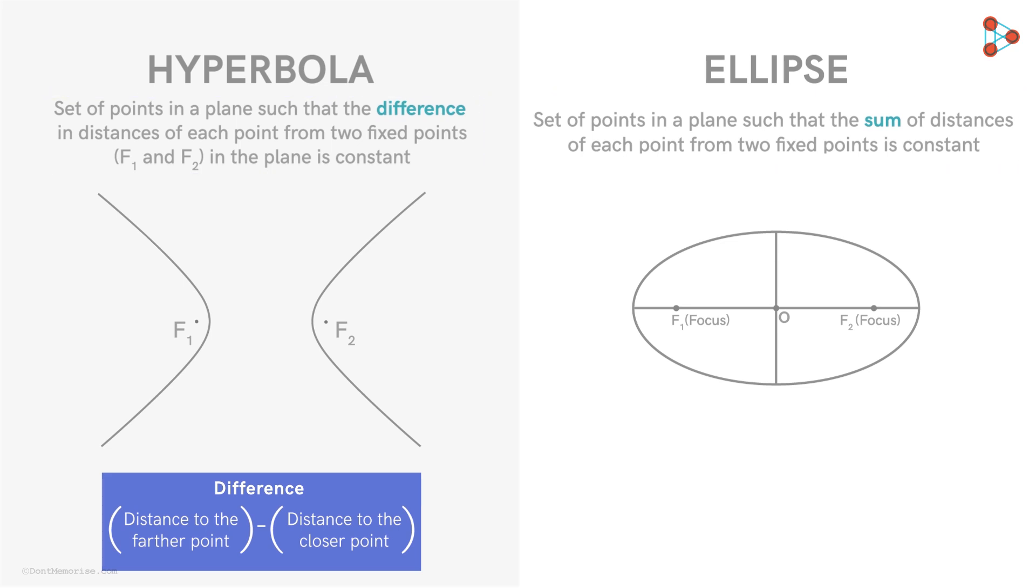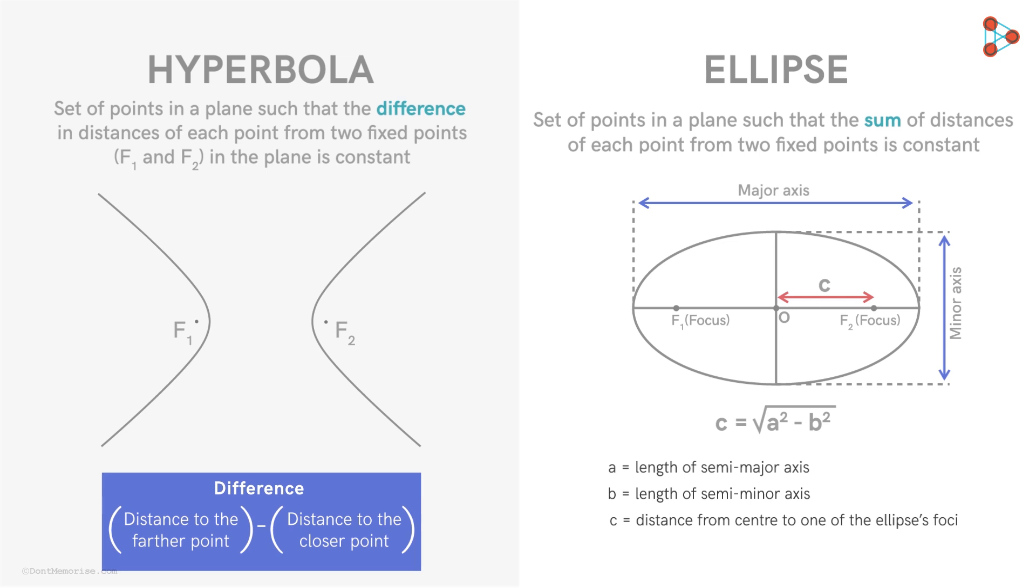Remember that for an ellipse, we saw what its center, its major axis, minor axis and so on really mean. Also, we saw the relation between the length of the major axis, the minor axis and the distance between the center and one of its foci. Such axes and relations also exist for a hyperbola. We will look at it in detail in the next lesson.